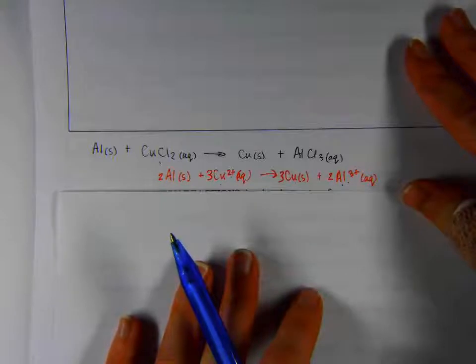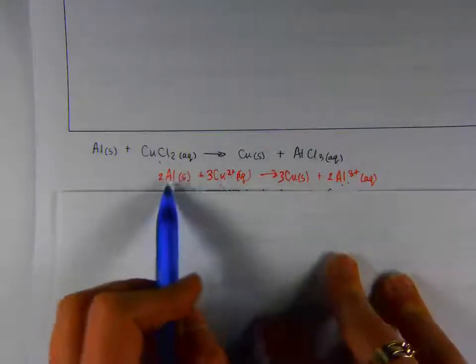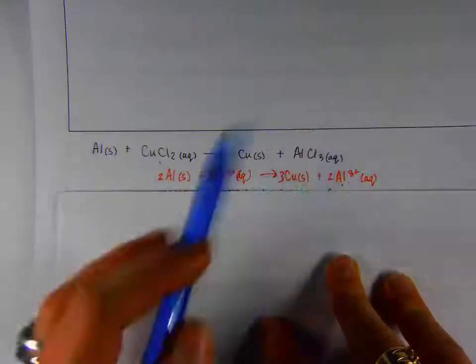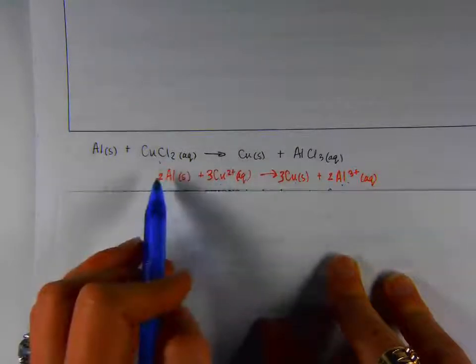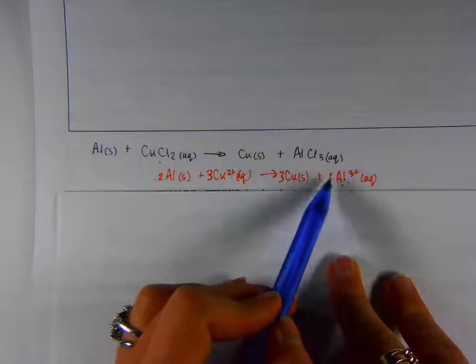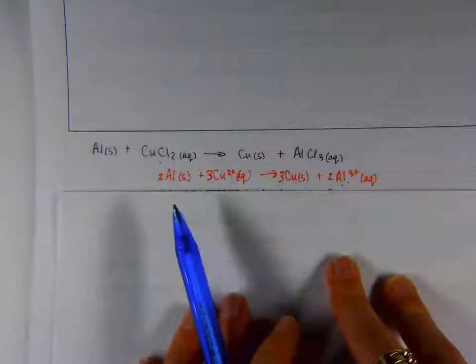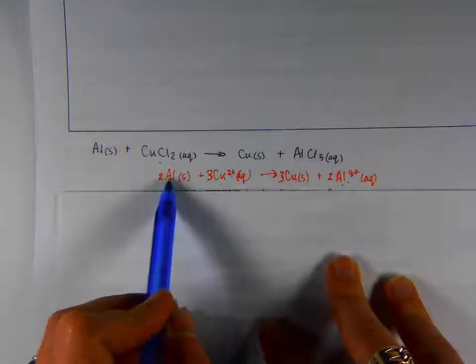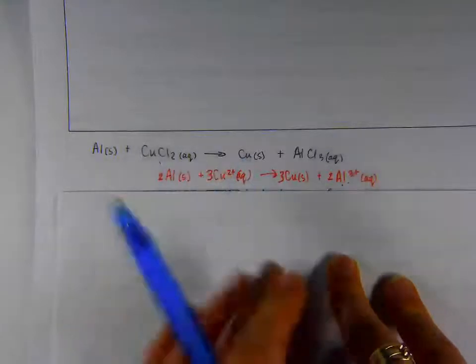All right, here is the net ionic equation correct and balanced out. One thing to note on net ionic equations, the number of atoms on each side should be balanced, but the charges on each side should be balanced, the overall charge. So we can see here that we have a positive 6 charge in total on the left side and a positive 6 charge in total on the right side when we do 2 times plus 3 and 3 times plus 2. So here's the net ionic equation. It's easy to see that aluminum had something happening with the electrons because its charge changes. Copper, same thing.